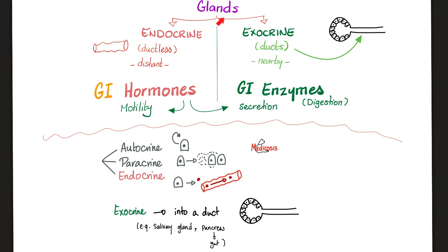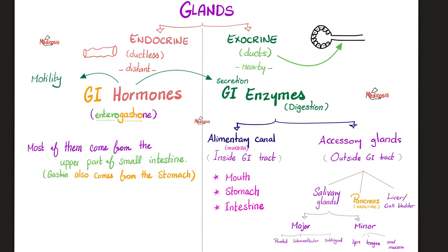What do we mean by endocrine gland? It's a gland without a duct — it is ductless, and it releases its secretions, hormones, into the bloodstream directly, without a duct. Blood will take it to distant destinations. Not only is the pancreas an endocrine gland, but it also has exocrine functions, which were discussed in the last video.